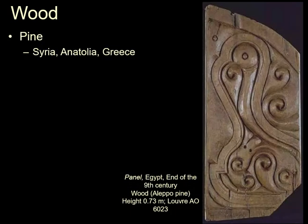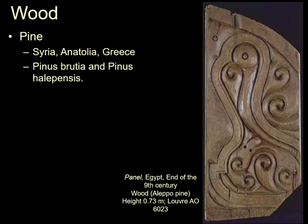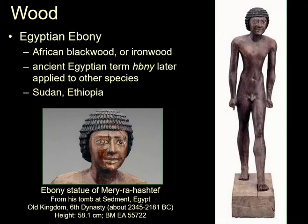Pine trees — you get Pinus halepensis in particular, the Aleppo pine, which is quite important and we find it in Egypt. This one is actually a medieval piece of Aleppo pine found in Egypt. It grows on the mountains below 1,000 meters, so it doesn't compete with the cedars. From Africa we have Egyptian ebony — which is the original ebony. The ancient Egyptian term for ebony is eventually applied to other species from other parts of the world, but what is Egyptian ebony is also called African blackwood or ironwood, and it comes from Sudan or Ethiopia.